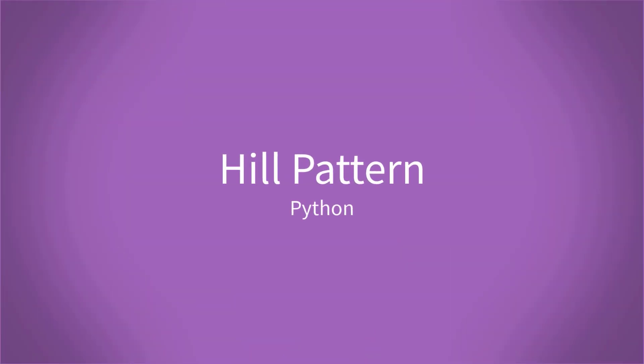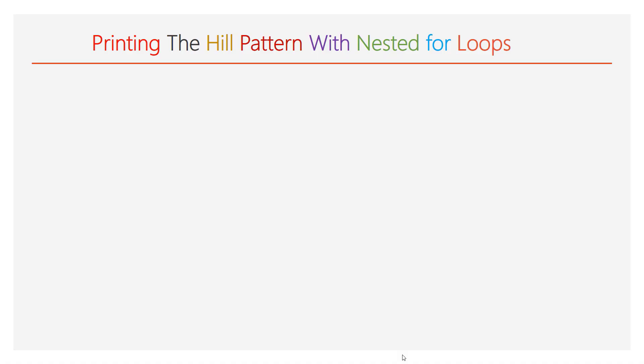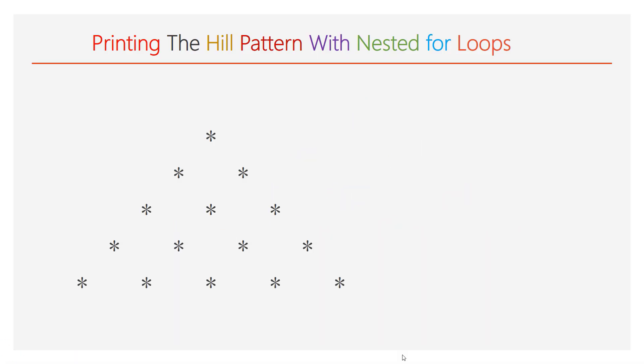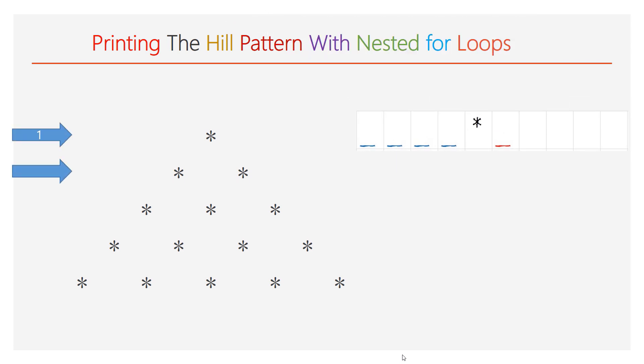Hi viewers, in this video we will see how to print the hill pattern using nested for loops. First, we will try to analyze the given hill pattern. In the first line, there is one star, and before the star there are four spaces.